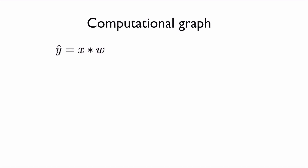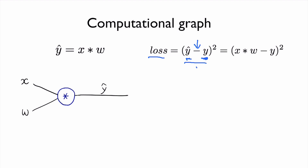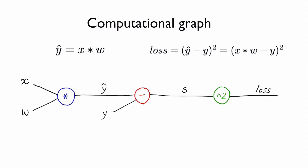Let's apply this idea to our simple linear model. How can we draw a computational graph for this model? We introduce a multiply gate that takes x and w as input and produces y-hat. For our loss, we connect a minus gate that takes y-hat and y as inputs and produces s, followed by a square gate that takes s as input and eventually produces the loss. So we have two different nodes: one is the minus gate and one is the square gate.